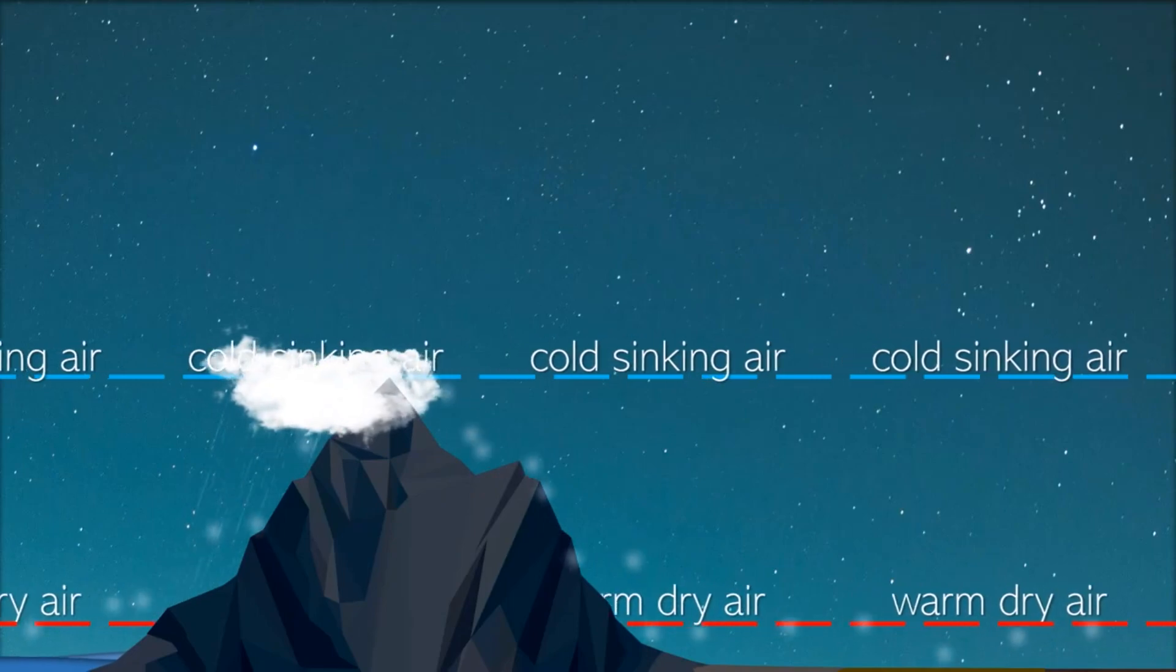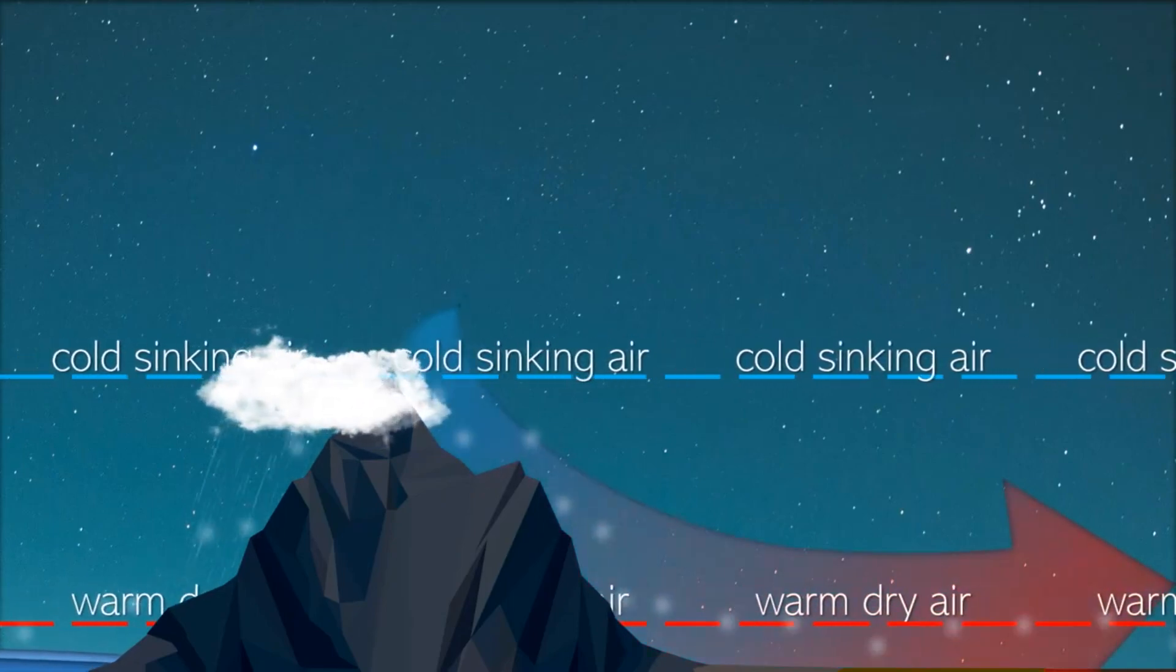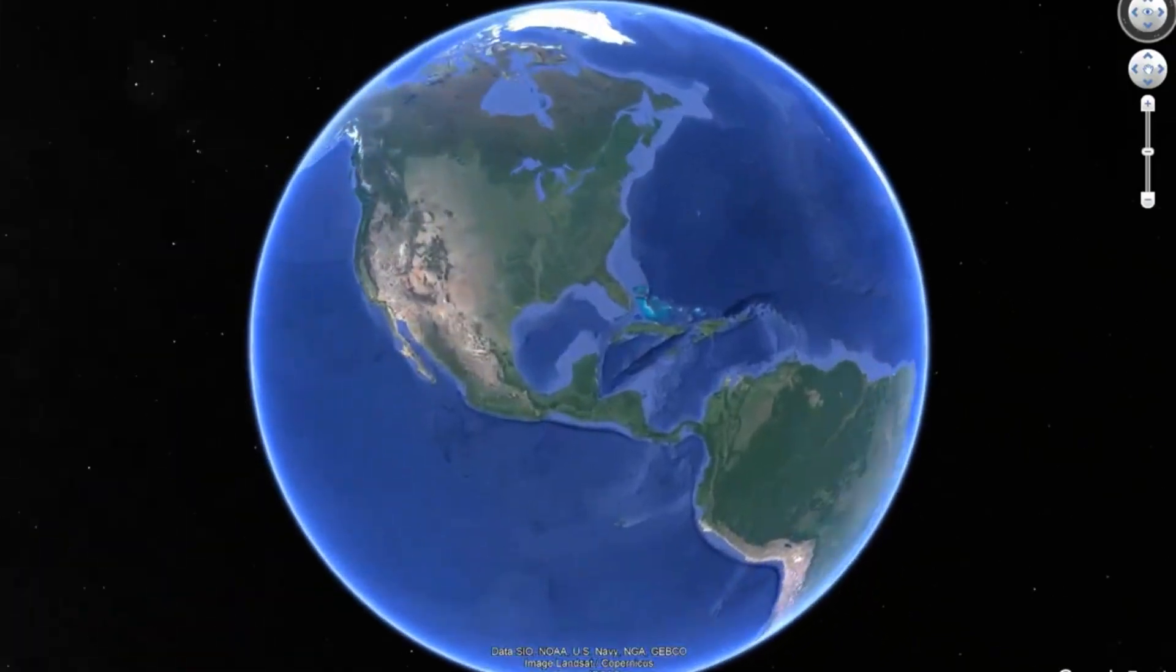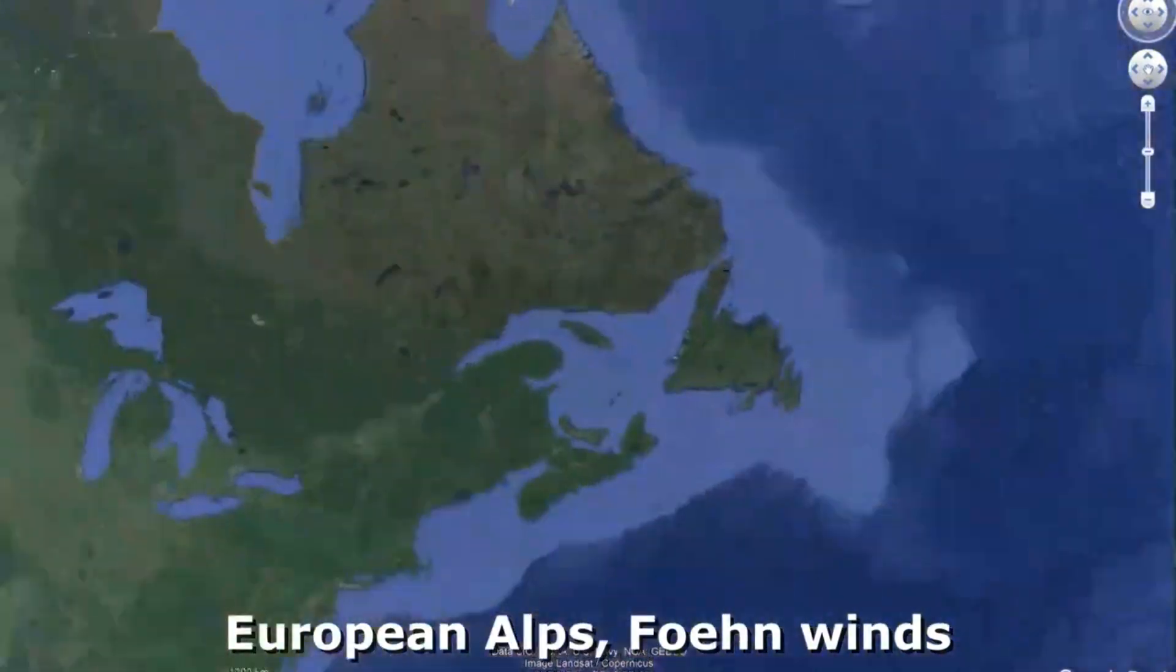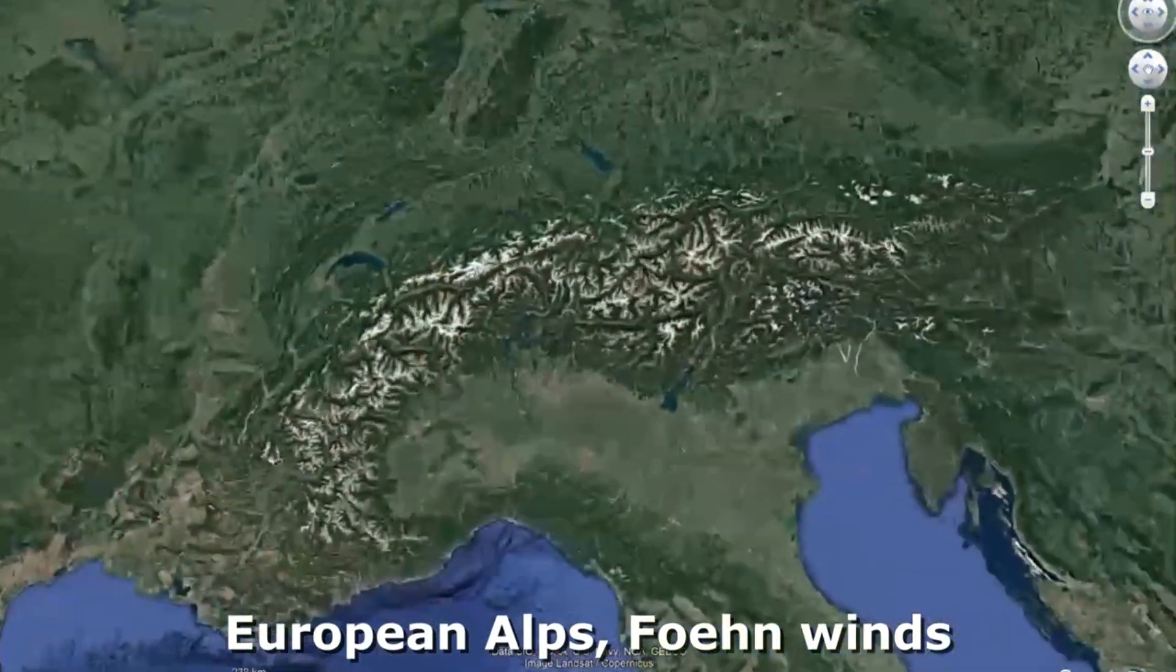This same practice is observed with the leeward drying winds flowing down a mountain. We've already discussed how in North America they're called Chinook winds. However, if you're in the European Alps, they're called Foehn winds.